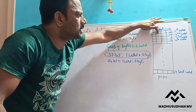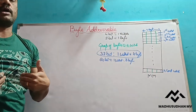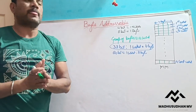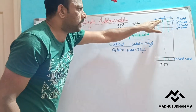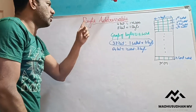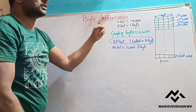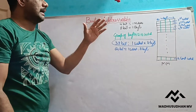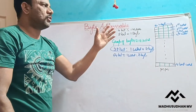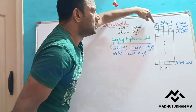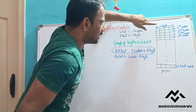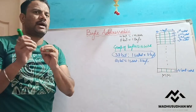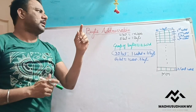Now the question is how to assign addresses so that we can identify each byte individually — just like we use names to identify people. Since byte addressable means one address per byte, we start numbering the bytes. We can either start numbering from the left side or from the right side: 0th byte, 1st byte, 2nd byte, 3rd byte, and so on.